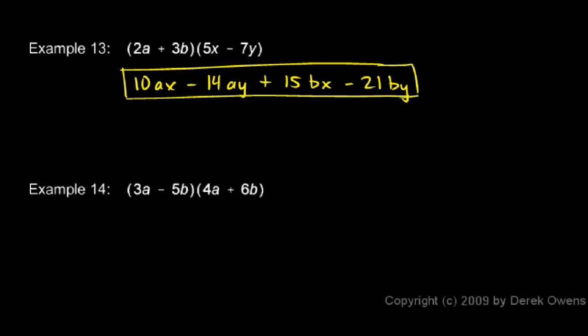Example 14: 3a minus 5b times 4a plus 6b. Let's do a FOIL. 3a times 4a is 12a squared. Then 3a times 6b is 18ab.